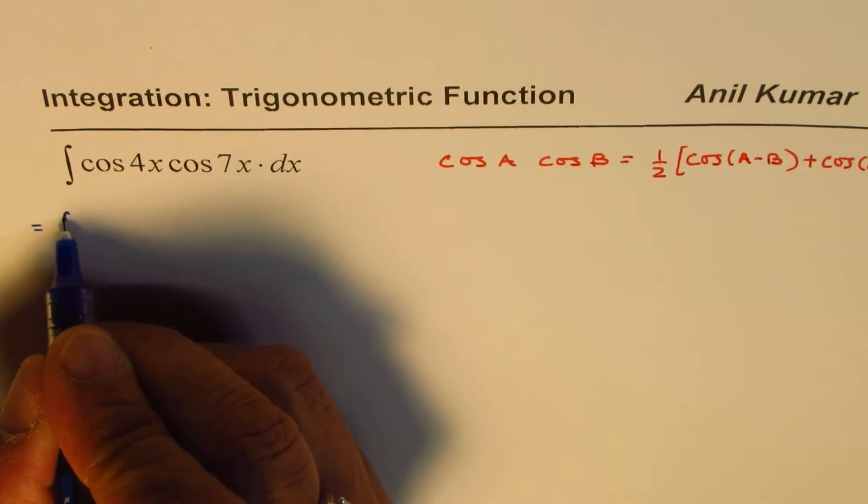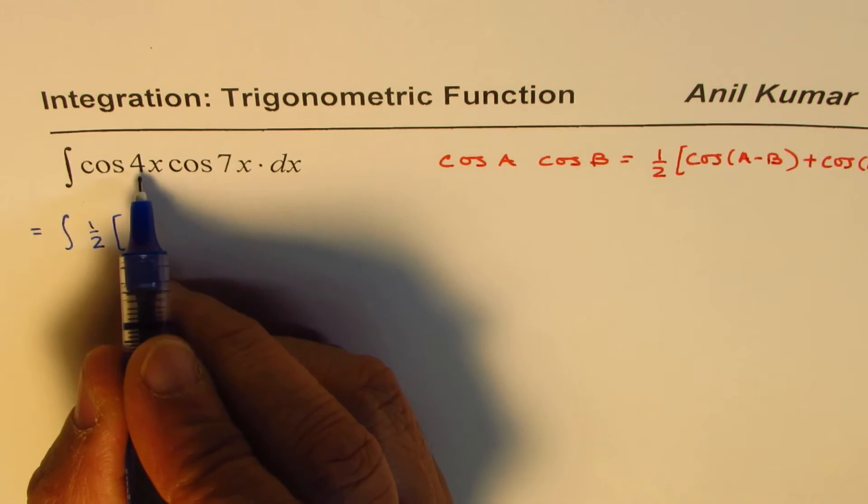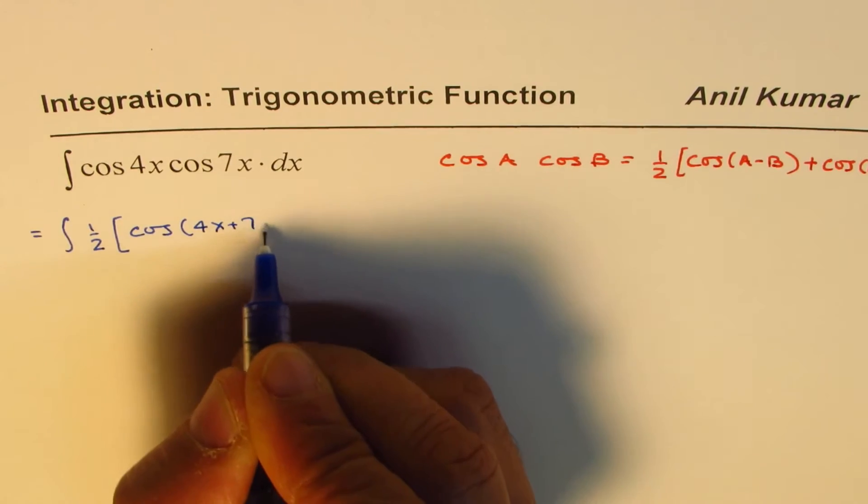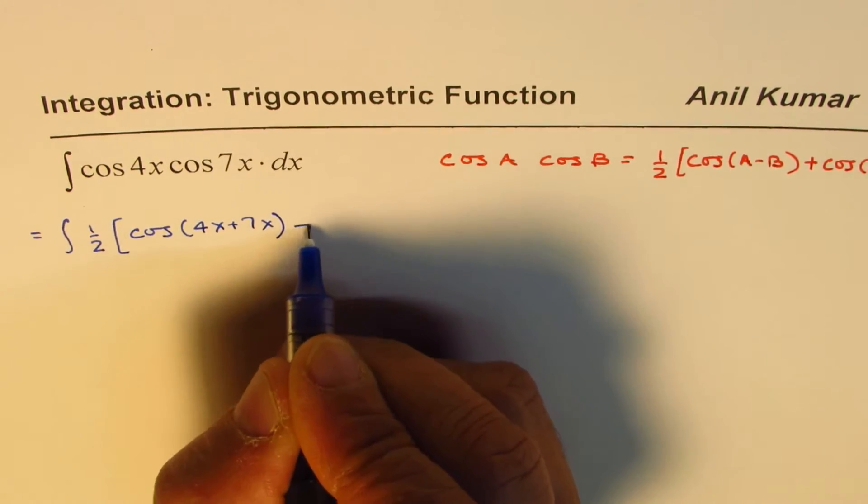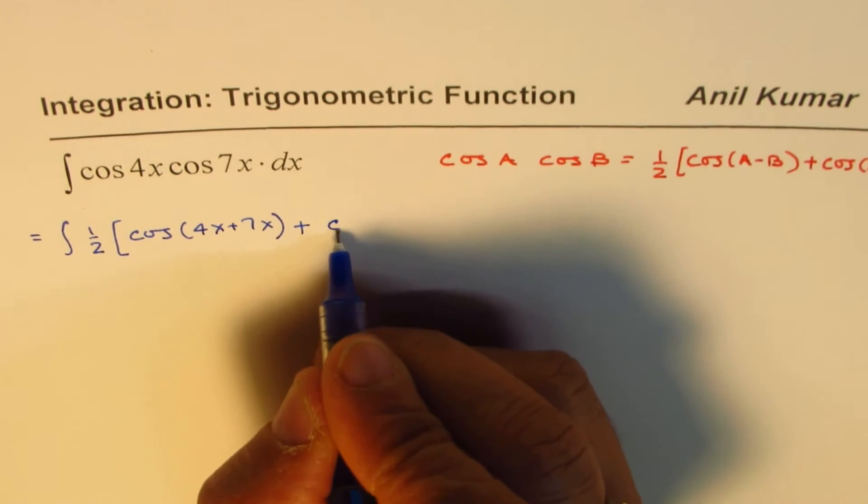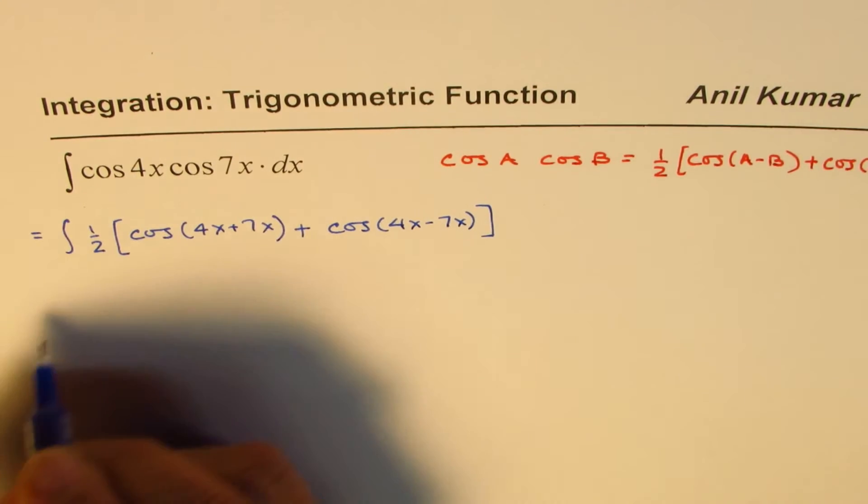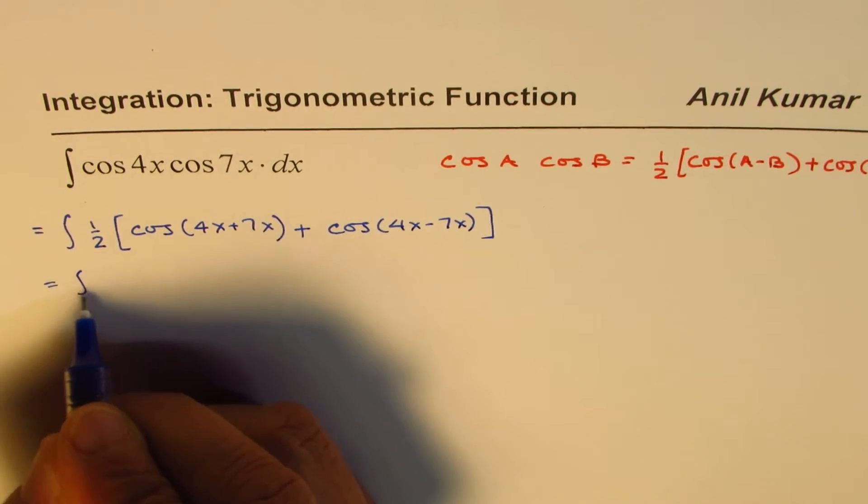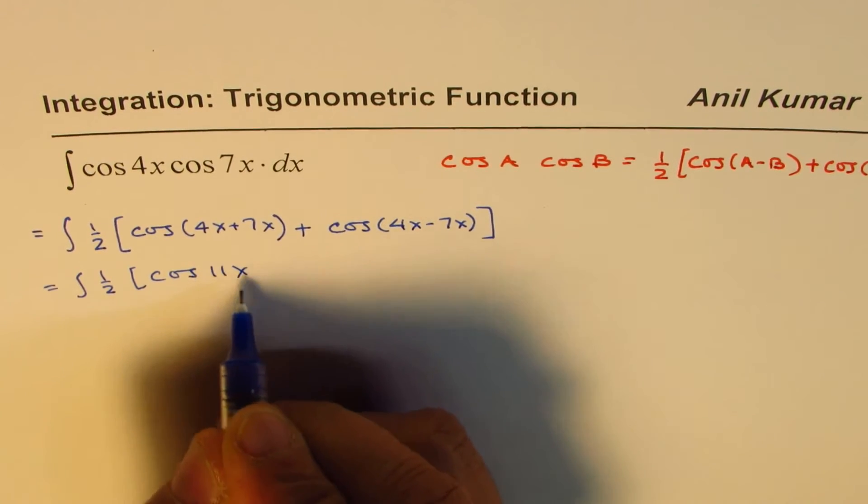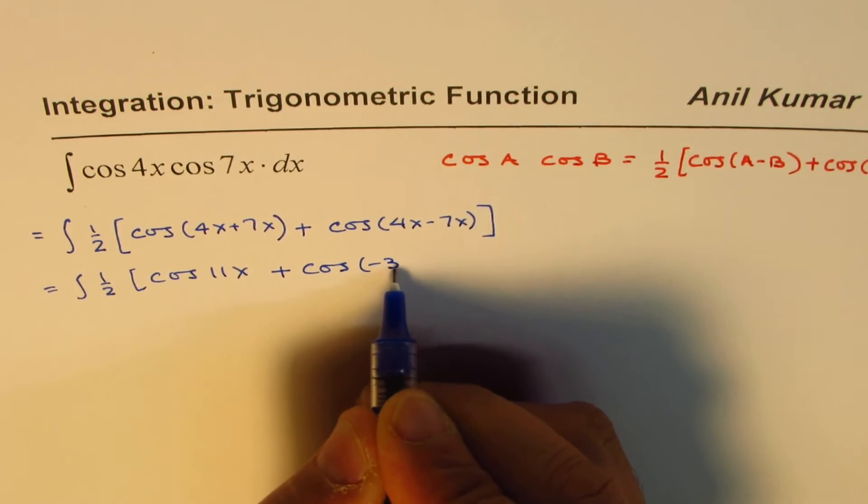we can write the integral as integral of half [cos(4x + 7x) + cos(4x - 7x)]. I should have written minus, but it's the same thing. You could change the order.